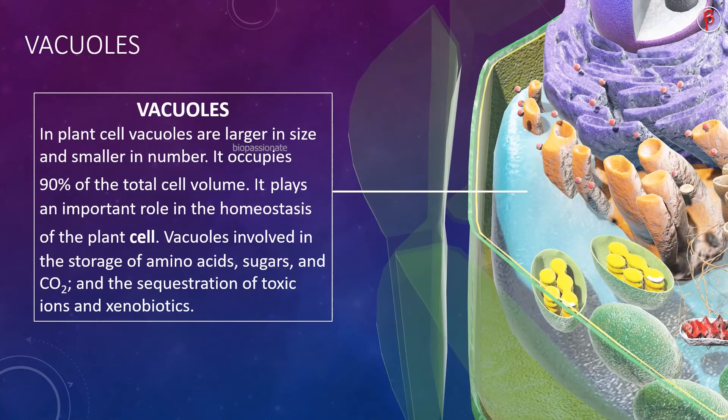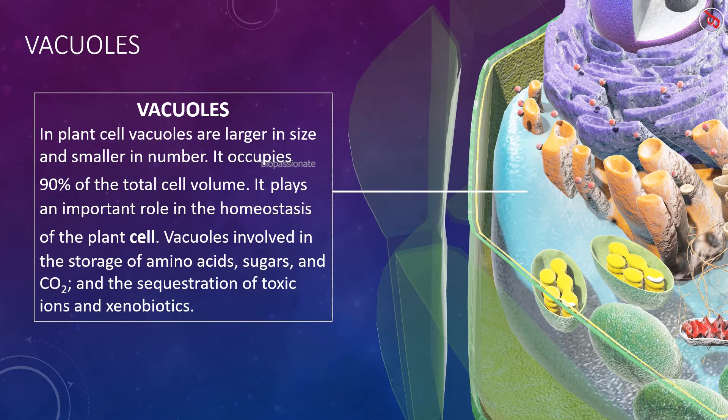In plant cells, vacuoles are larger in size and smaller in number. They occupy 90 percent of the total cell volume and play an important role in the homeostasis of the plant cell. Vacuoles are involved in the storage of amino acids, sugar and carbon dioxide.